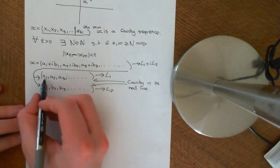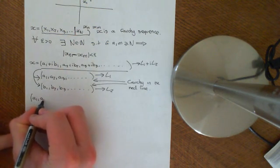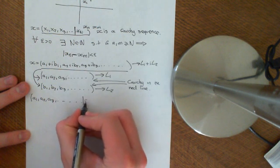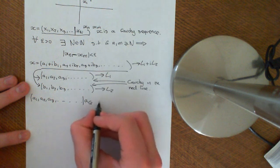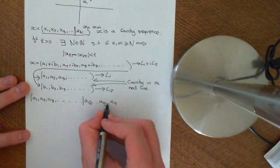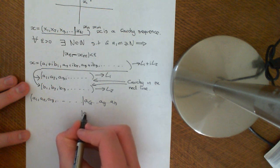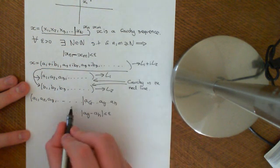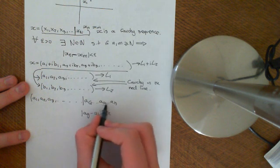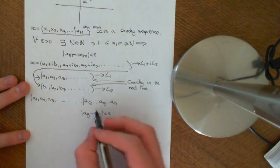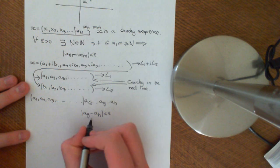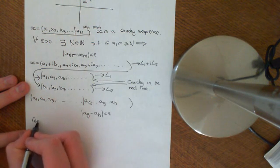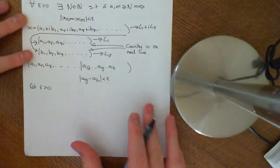Let's start with the sequence A: A1, A2, A3. To show it's Cauchy, for any given epsilon, we need to find some point big G such that if you pick any two terms Ag and Ah beyond that point, the absolute value of Ag minus Ah is less than epsilon. So let epsilon be greater than zero, and let's prove we can do this.